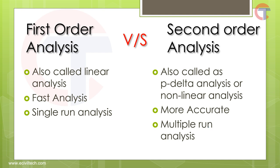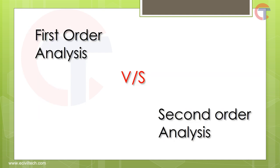First order analysis is fast because we run the model one time only. Second order analysis is more accurate and more practical because we run the model multiple times. This is the basic difference between first order and second order analysis. I hope you understand the topic — there is a lot more to discuss regarding linear and non-linear analysis, but in this video I tried to cover very basic knowledge and keep it simple. Let me know in the comments if you want more such topics.